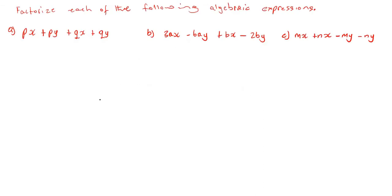We have to factorize each of the following algebraic expressions. The first expression is px + py + qx + qy. We're going to factorize by grouping, so we separate them into pairs — one pair and another pair.